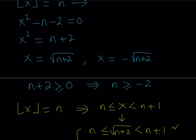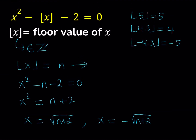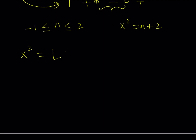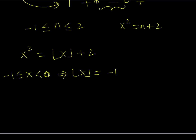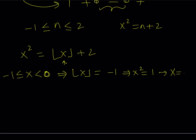Looking at the original equation again — x squared equals floor value of x plus 2 — x values need to be greater than or equal to negative 1. If x is on the interval [-1, 0), its floor value is negative 1. Substituting, x squared equals 1, and considering the interval, we get x equals negative 1, which falls in that interval. So x equals negative 1 is a valid solution.